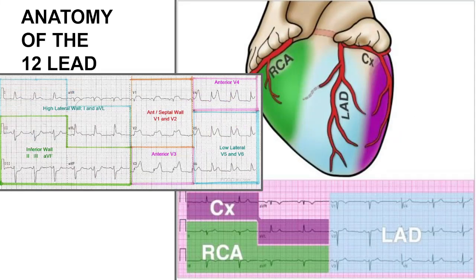We're going to talk about the high lateral MI today. If you look at the upper EKG on the left, that is a great example of a high lateral MI. You can see some elevation in lead one, elevation in AVL, and of course reciprocal depression in 2, 3, and AVF. If you look at the purple section of the heart, that is where the blockage would be — most of the time it would be a blockage of the left circumflex artery that produces the high lateral MI.